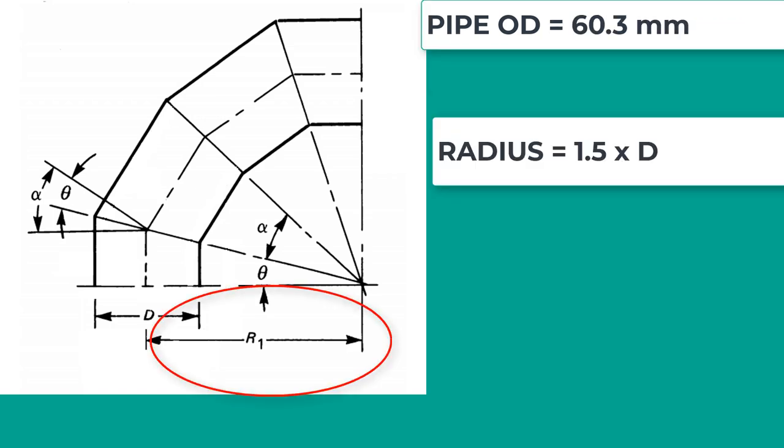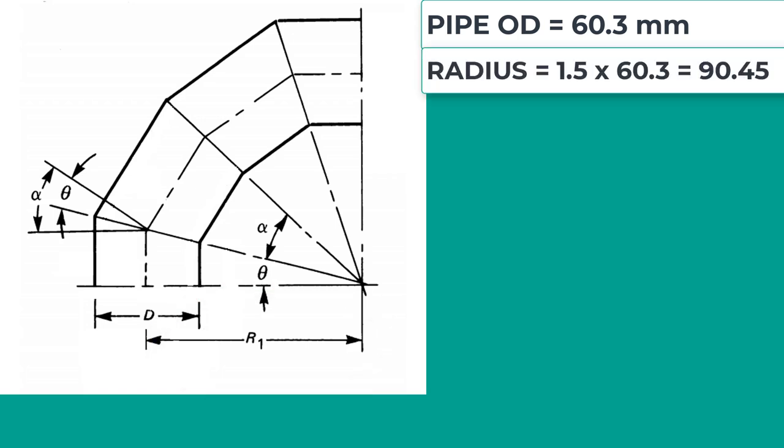Radius of elbow equal to 1.5D. So, the radius will be 60.3 x 1.5 equal to 90.45mm.